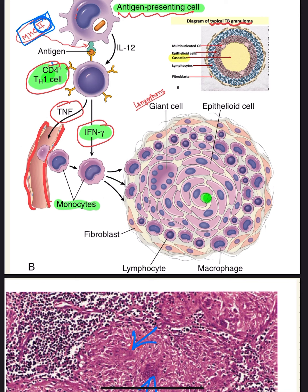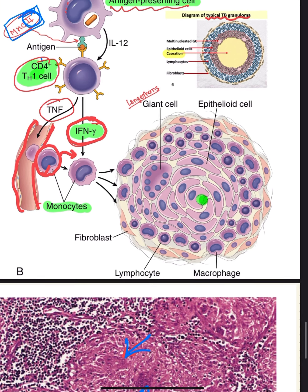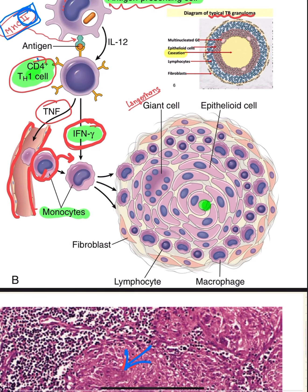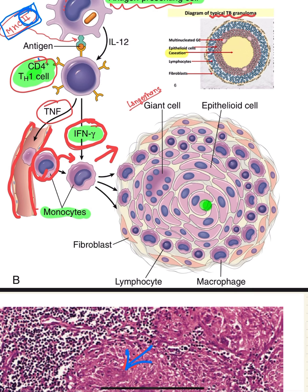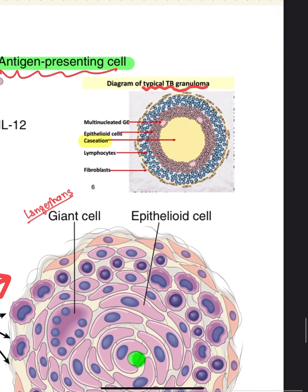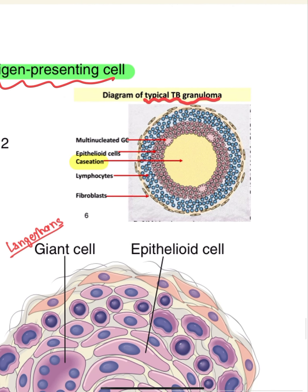A sufficient number of these monocytes get extravasated and reach the site of inflammation. The function of interferon-gamma is to cause the activation of macrophages, and this leads to the formation of the granuloma.